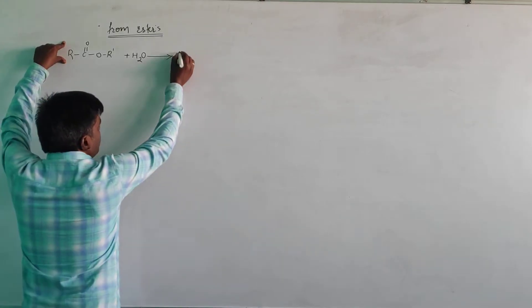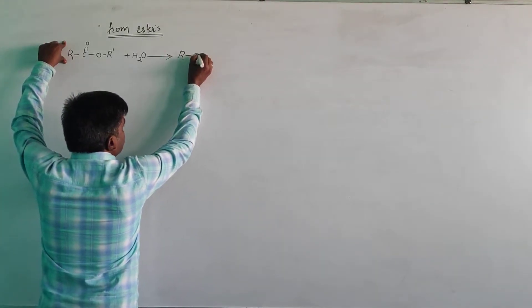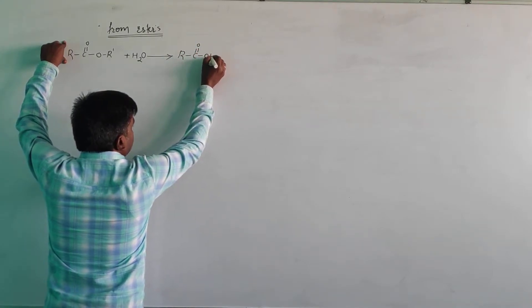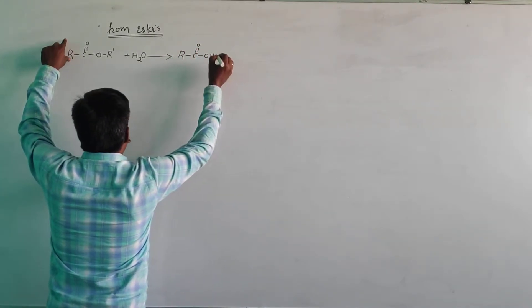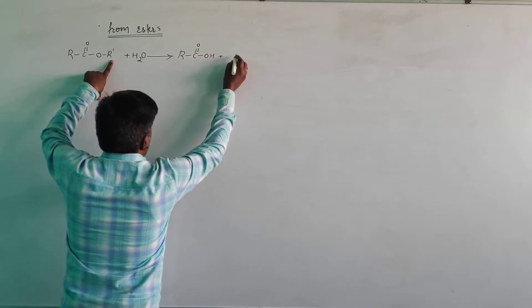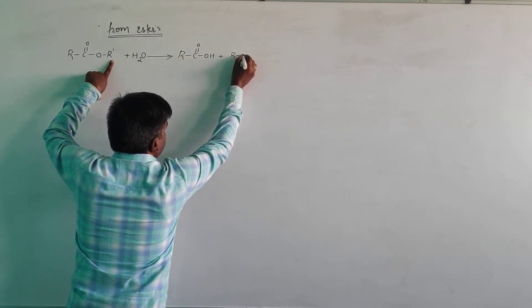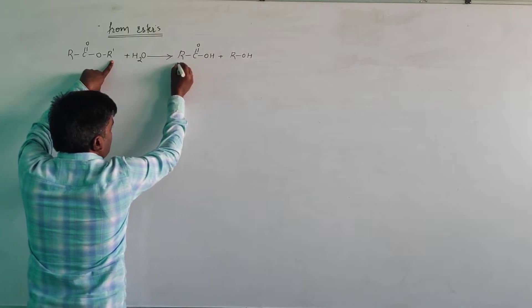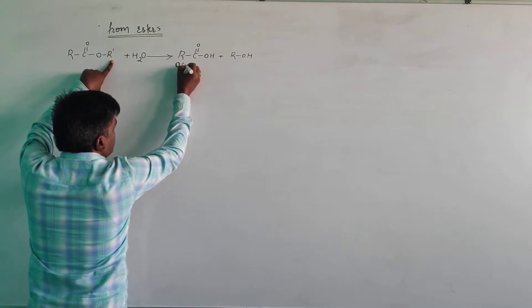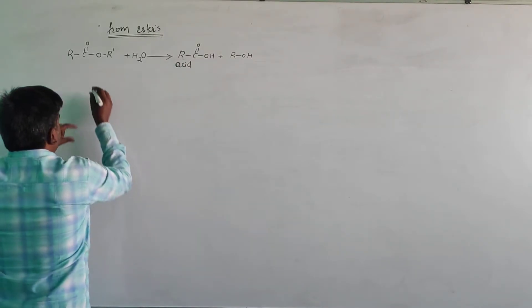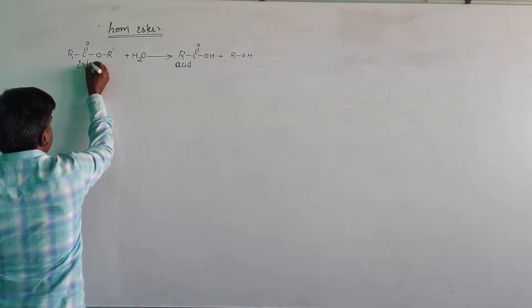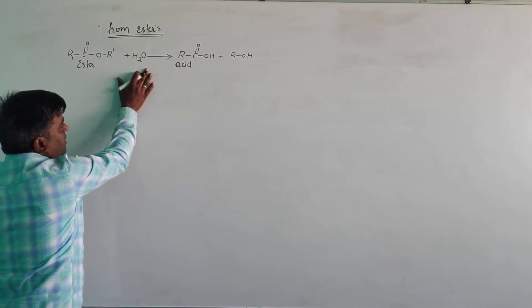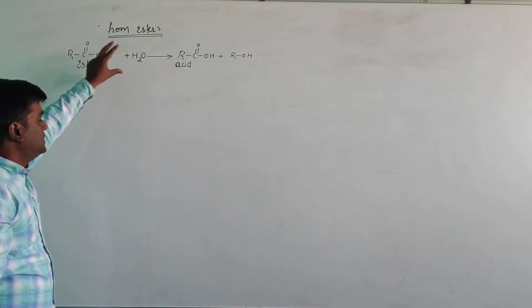The products are R-C(=O)-OH, that is carboxylic acid, and alcohol. Alcohol is the byproduct and the main product is the carboxylic acid. When esters undergo hydrolysis, they produce the compound called carboxylic acid.